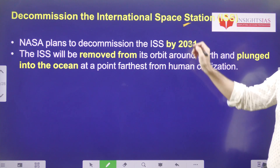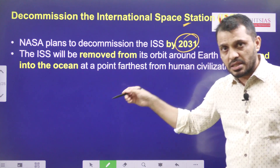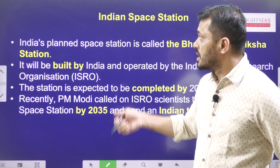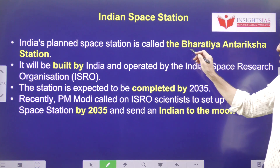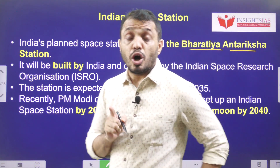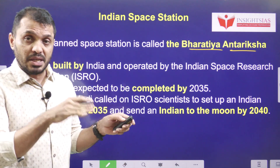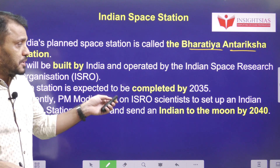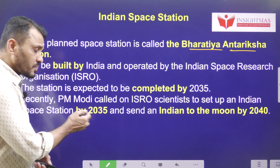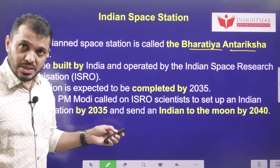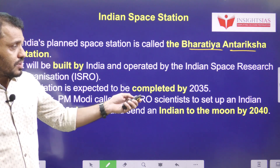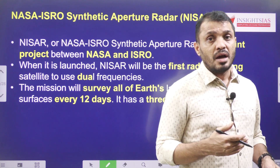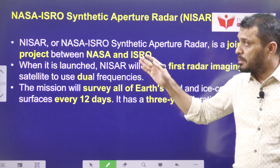The ISS is going to be decommissioned in 2031. It will be removed from its orbit and plunged into the ocean at a point far from human habitation. India is planning to have its own space station called Bharatiya Antariksh Station, to be built by ISRO and completed by 2035, placed in low Earth orbit. After launching this space station, India aims to send Indians to the Moon by 2040.